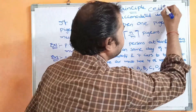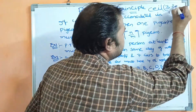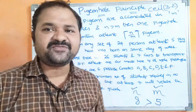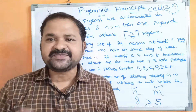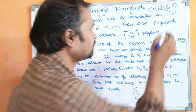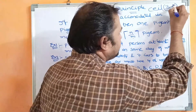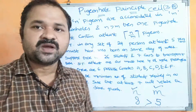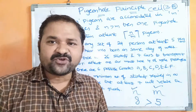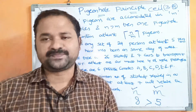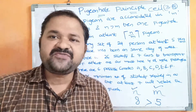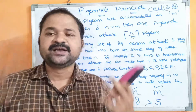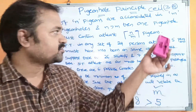The ceiling function always produces the next integer value. For example, ceiling of 3.2 — after 3, what is the next integer value? 4. Ceiling of 3.8 — after 3, what is the next integer value? 4. So the ceiling function always produces the next integer value.